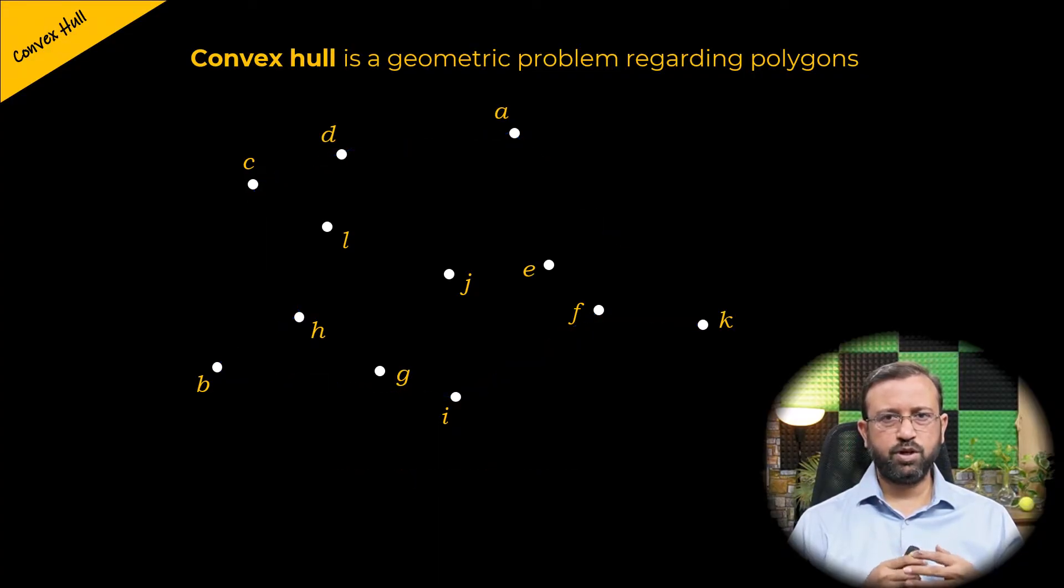But suppose if we join the points B, I, K, A, D, C, and B, this also creates a polygon and it's a convex polygon where all the points are either on its edges or inside the region the polygon encloses.